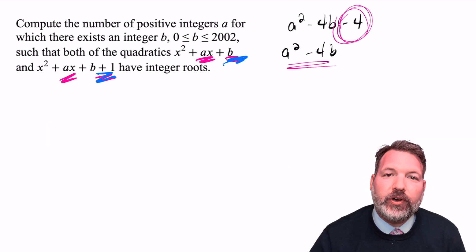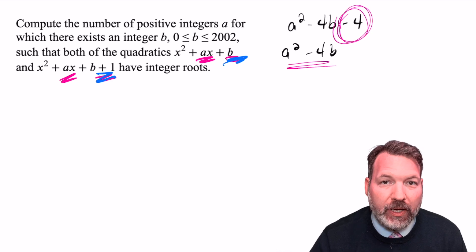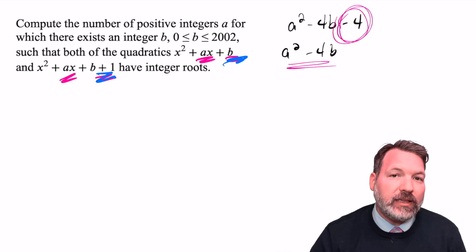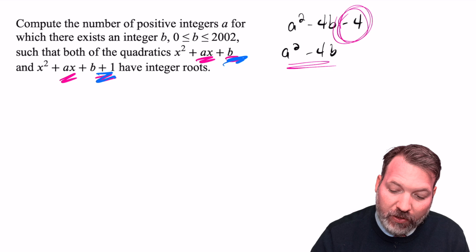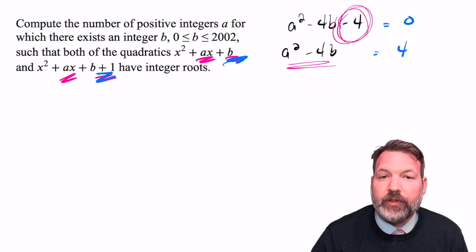Even more importantly, however, knowing that these expressions represent two different quantities that must be perfect squares, we can actually limit our search to perfect squares that are 4 apart. And in fact, there are only two such perfect squares. The only two perfect squares that are 4 apart are 0 and 4 themselves.